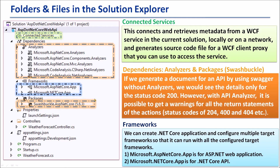The next item is Frameworks. We can create a .NET Core application and configure multiple target frameworks so that it can run with all configured target frameworks. There are two framework applications in this default project. The first one is Microsoft ASP.NET Core application, for ASP.NET web applications. The second one is Microsoft .NET Core application, for .NET Core API.